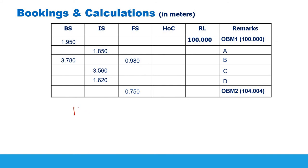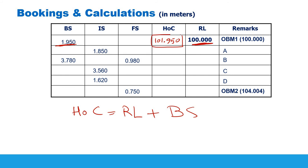Now we do the calculations. First we calculate the height of collimation: the reduced level of the benchmark plus the back sight over it. In this case 100 meters plus 1.950 gives a height of collimation of 101.950. From this height of collimation we subtract the intermediate sights and fore sights. 101.950 minus 1.850 gives the reduced level of A, which is 100.100.